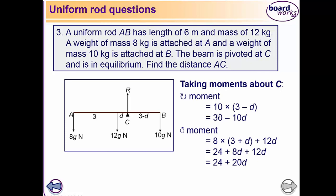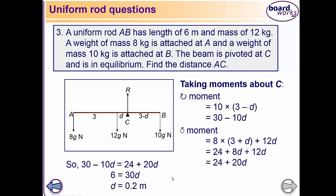Solving for d: the clockwise moment equals the anticlockwise moment. We get 30 minus 10d equals 24 plus 20d, so 6 equals 30d, giving d equals 0.2 meters. Therefore the distance AC is 3.2 meters.